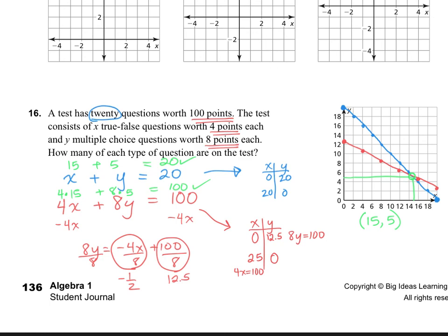So we know that we have 15 x's. And x's, if you remember, is true-false questions. So 15 true-false questions. And we have 5 y's, which we know are the multiple-choice questions. Okay, that's it. Thanks for watching.